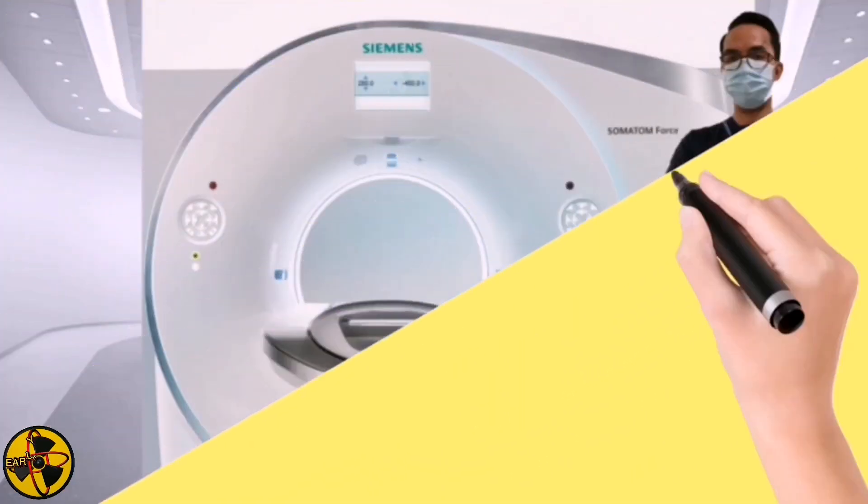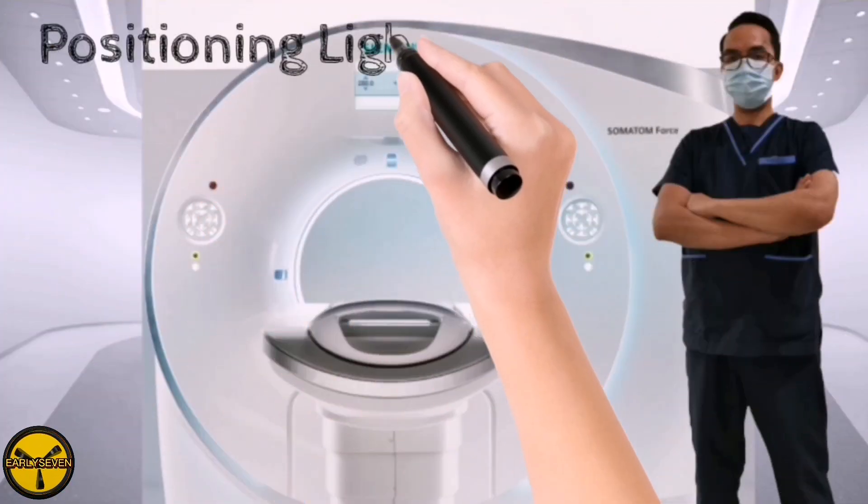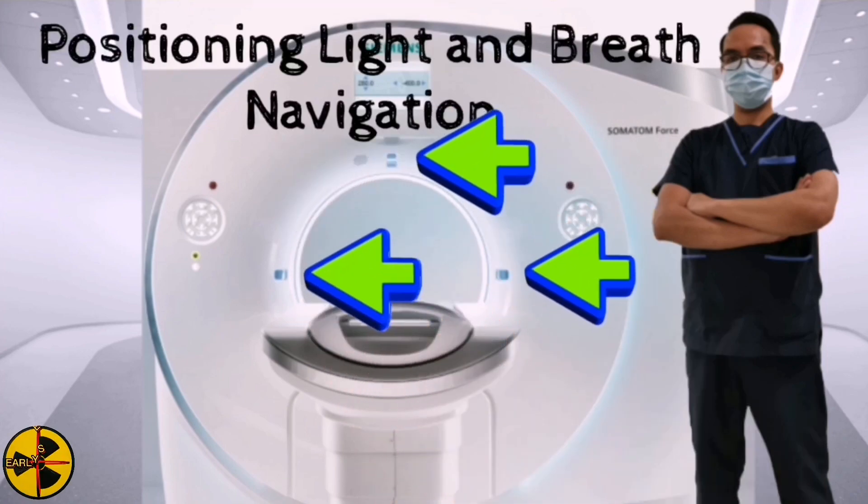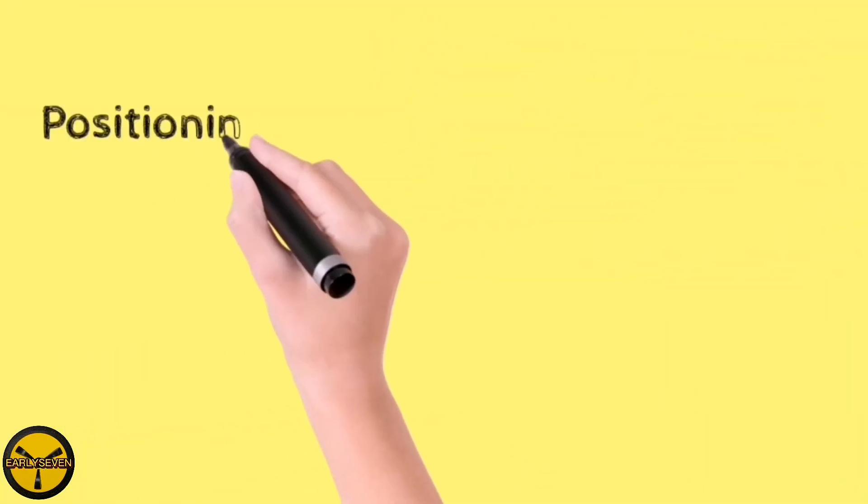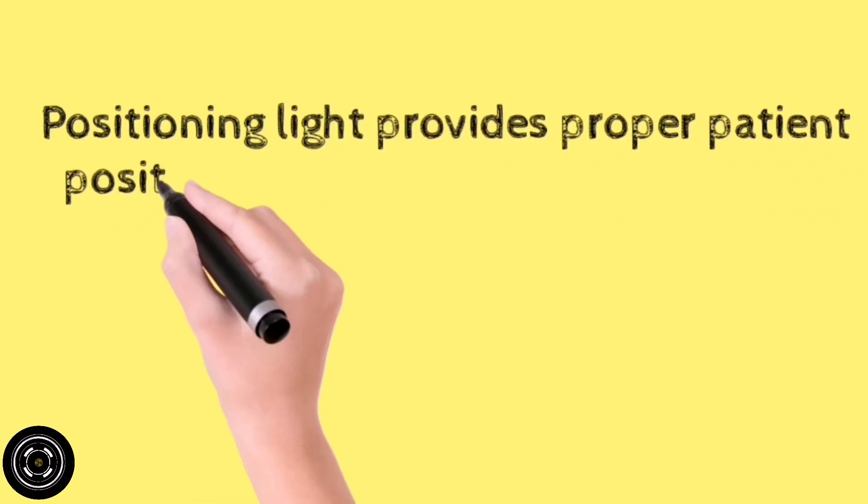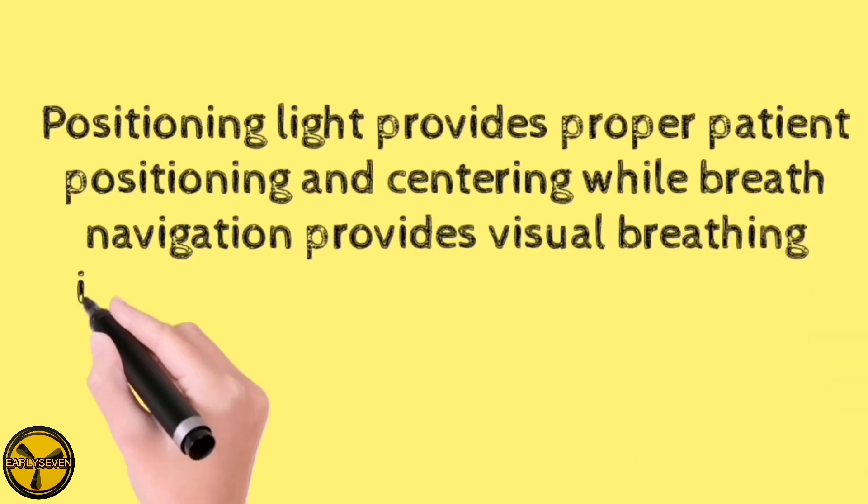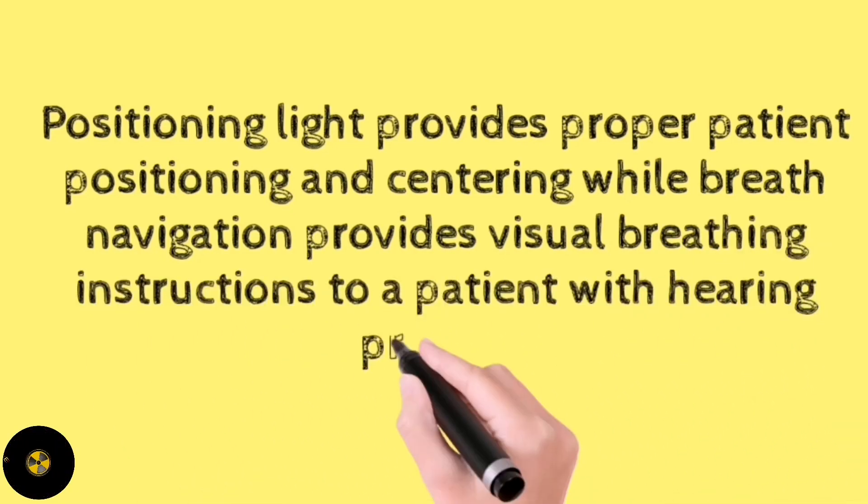The fourth functions in the CT scan gantry is the positioning light and breath navigation. Positioning light provides proper patient's positioning and centering, while breath navigation provides visual breathing instructions to a patient with hearing problem.